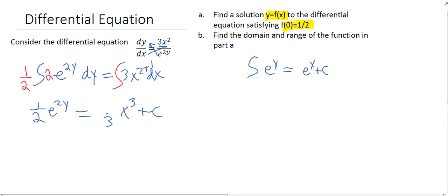Well, 3/3 will cancel, right? So all we're left with is x³ plus c. And now let's plug in our known values. So we have 1/2 e^(2·1/2), right?